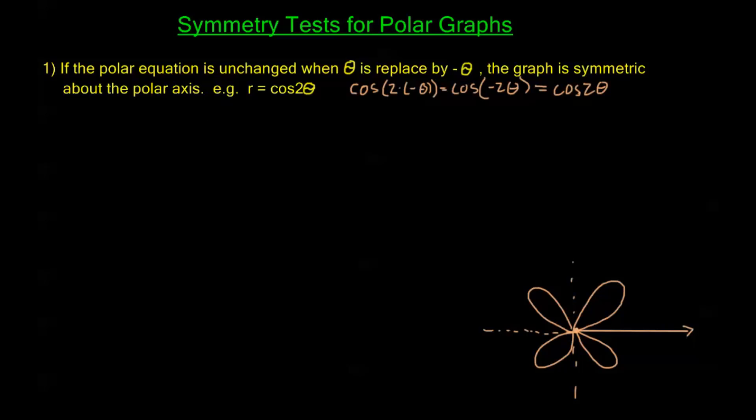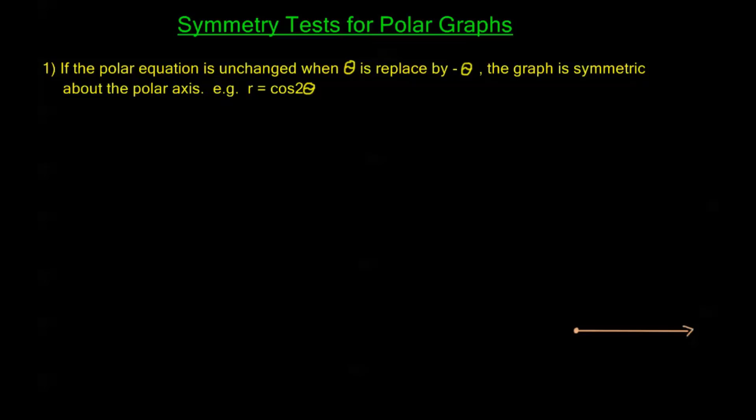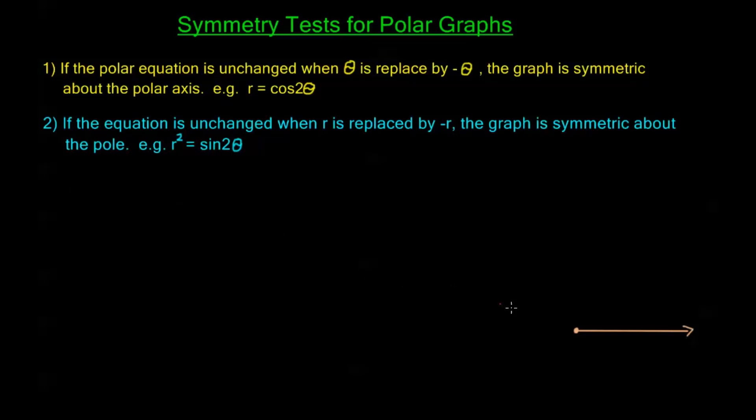Okay, let me clean this up, let's take a look at our second symmetry test. Now our second symmetry test says, if the equation is unchanged when r is replaced by negative r, the graph is symmetric about the pole. So for example, r squared equals sine of two theta. Now we haven't done anything with r squareds yet, that's going to be coming up, but we just kind of look at this symmetry test first. But when I say symmetric about the pole, let's say I have something like this over here.